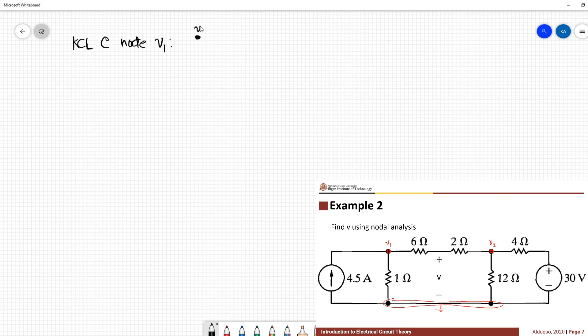So this is V1. We have 3 currents. We have negative 4.5 plus V1 over 1 plus V1 minus V2 over 6 plus 2 equal to 0.